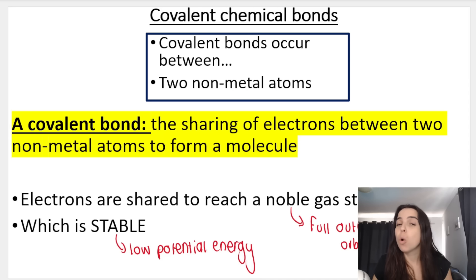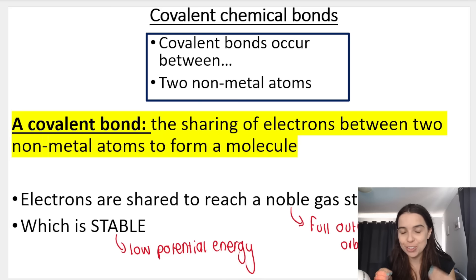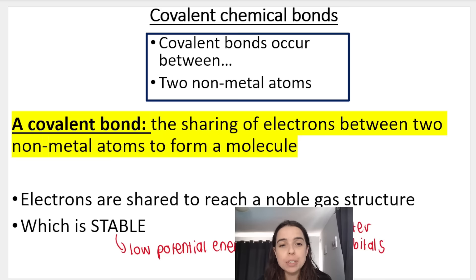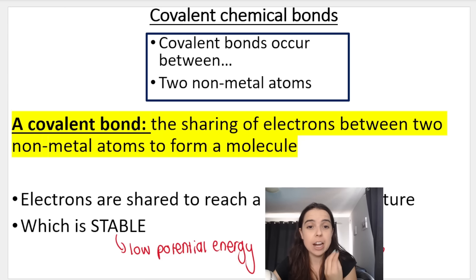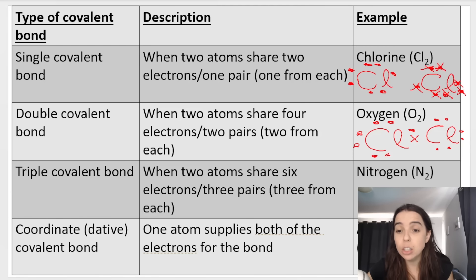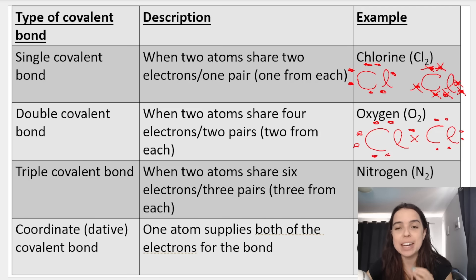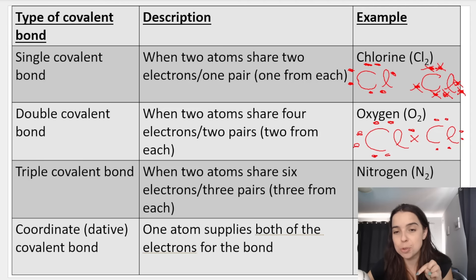Before we get into a dative or coordinate covalent bond, I just want to remind you about covalent bonds in general. A covalent bond is when we have the sharing of electrons between two non-metal atoms to form a molecule. Electrons are being shared because this helps atoms reach noble gas structure. They want their outer orbitals to be full, which creates a low potential energy, stable molecule. We can get a single, double, or triple covalent bond, and we represent covalent bonding with Lewis dot diagrams. Check out the links in the description box below for those videos.